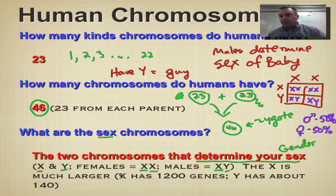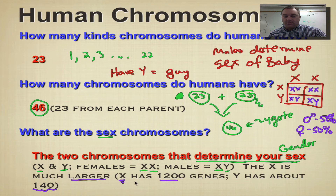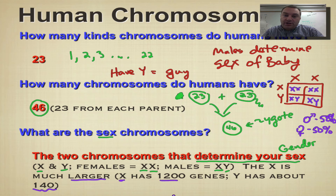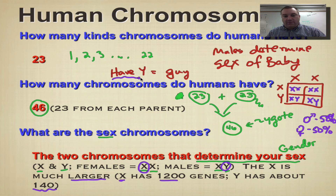There's a big size difference between an X and a Y chromosome. The X is much larger — it's going to have about 1,200 genes on it. But the Y is just a little guy; it only has about 140. The main thing found on a Y chromosome is a gene that acts like a switch. Every human being is pre-programmed to be a girl, because you're going to get an X chromosome from your mom. It's that one gene on the Y that switches you from female to male — that's why when you have a Y, you're a guy.